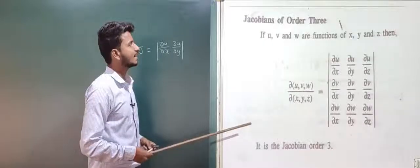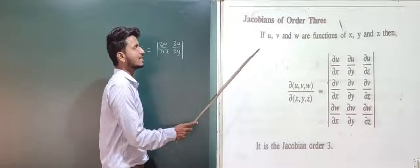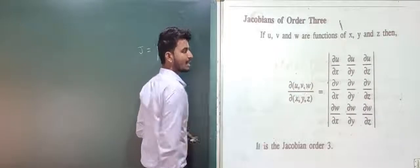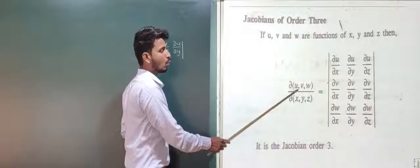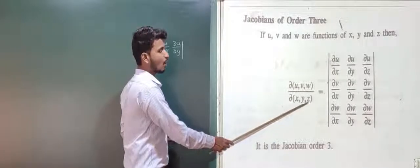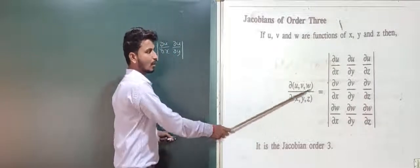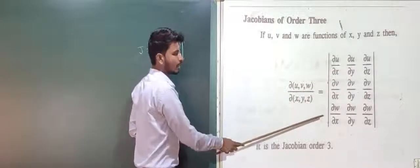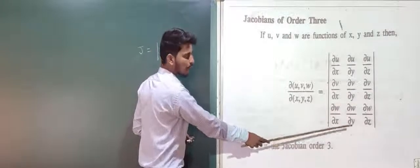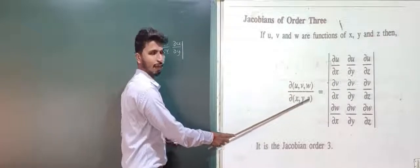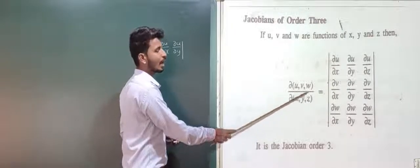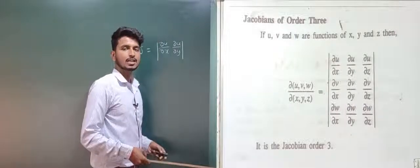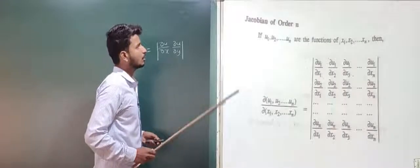Next we will see the Jacobian of order 3. Here we consider three functions: if u, v, and w are functions of independent variables x, y, and z, then the Jacobian ∂(u,v,w)/∂(x,y,z) is represented in determinant form as: ∂u/∂x, ∂u/∂y, ∂u/∂z in the first row; ∂v/∂x, ∂v/∂y, ∂v/∂z in the second row; and ∂w/∂x, ∂w/∂y, ∂w/∂z in the third row.